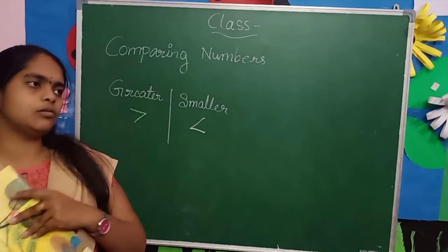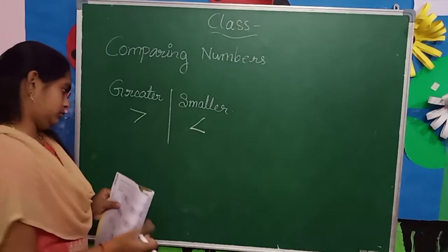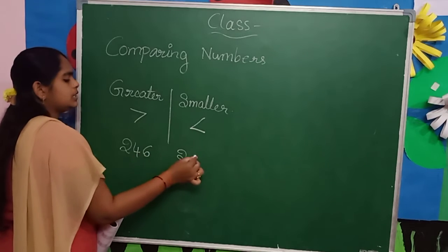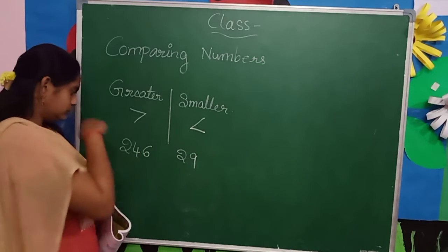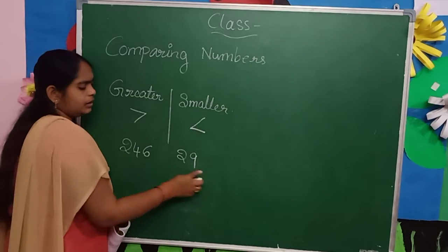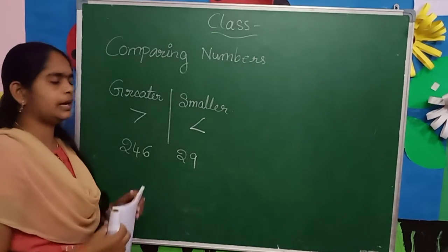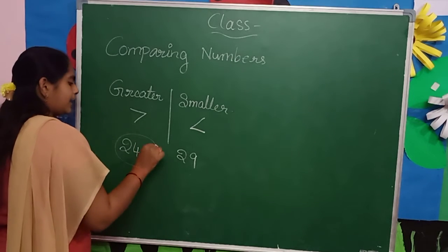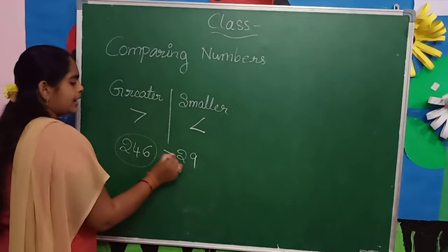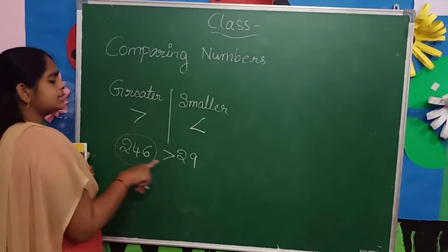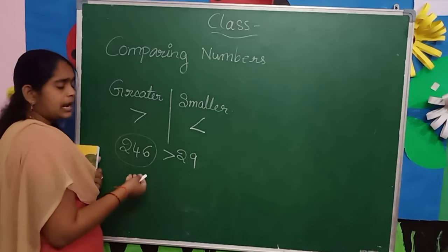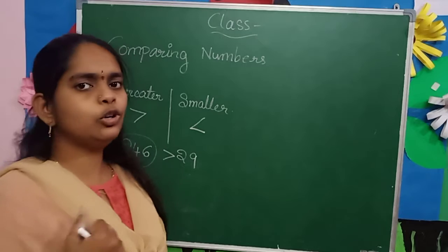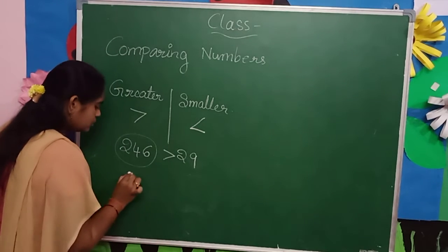Suppose two numbers: 246 and 29. Now, two numbers — here three digits, here only two digits. So the comparison is very easy. This number is greater than this number. It has three digits and here it has only two digits.